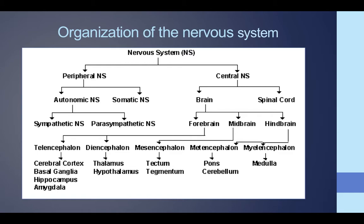The peripheral nervous system is broken down into the autonomic nervous system, which is comprised of the sympathetic nervous system and the parasympathetics. This diagram fails to show that there's a third section known as the enteric nervous system, which is a vast nervous system in the gut that controls digestion. The other part of the peripheral nervous system is the somatic nervous system, which is voluntary control of our muscles.